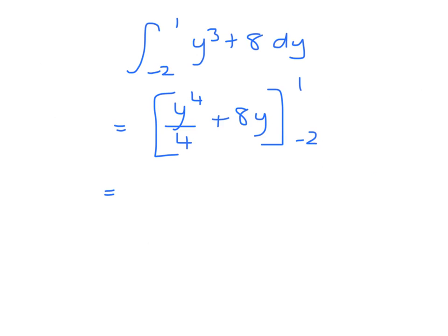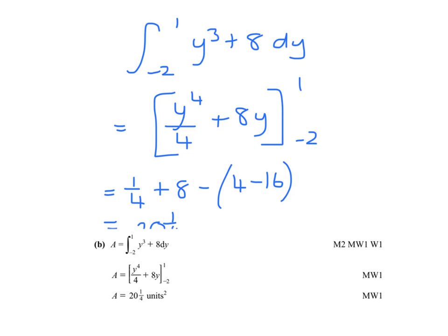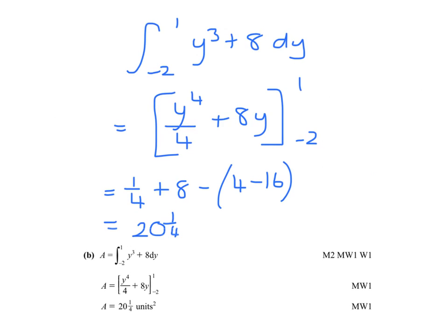Substituting in the 1, get a quarter plus 8. Take away minus 2 to the power 4 is 16, 16 divided by 4 is 4, minus 16. And that gives us 20 and 1 quarter. And we can see here in the mark scheme that I've done it in the same method.